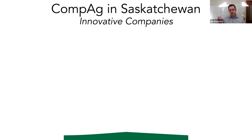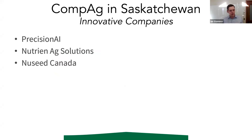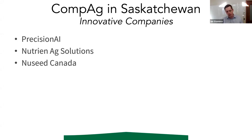Another reason computational agriculture has such potential in Saskatchewan is the large number of innovative companies in this space. I wanted to mention three in particular: Precision AI, a startup out of Regina working on drone-based selective spray and precision agriculture; Nutri-Nag Solutions, a breeding company and service provider; and NewSea Canada, a breeding company. They've really recognized the importance of computation within their processes and embraced it.